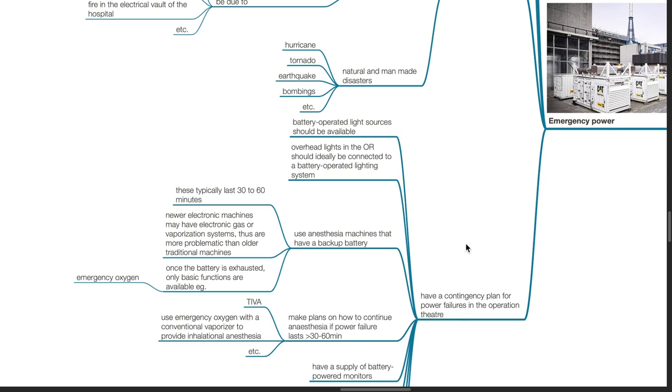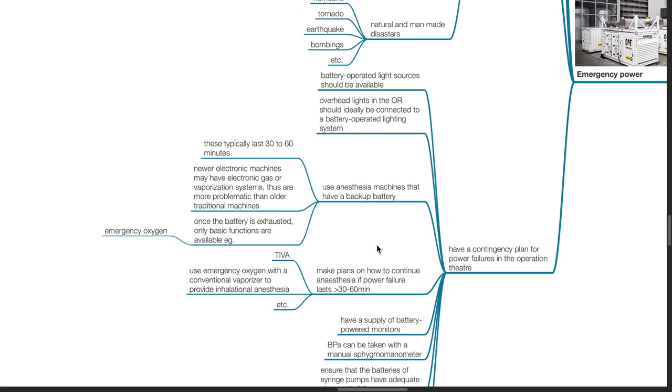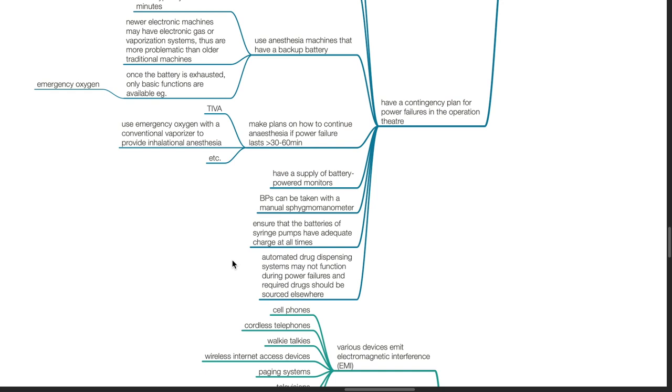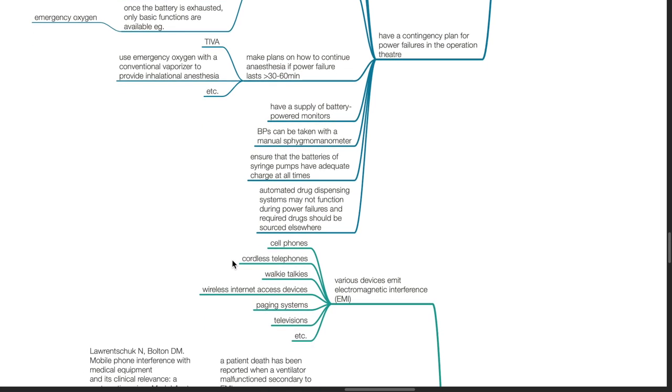Anesthetists should have a contingency plan for power failures in the operation theater. Battery-operated light sources should always be available. Overhead lights in the OR should ideally be connected to a battery-operated lighting system. Use anesthesia machines that have a backup battery; these typically last 30 to 60 minutes. Newer electronic machines may have electronic gas or vaporization systems, thus are more problematic than older traditional machines. Once the battery is exhausted, only basic functions are available such as emergency oxygen. Make plans on how to continue anesthesia if power failure lasts more than 30 to 60 minutes, such as by use of TIVA or use of emergency oxygen with a conventional vaporizer to provide inhalational anesthesia. Have a supply of battery-operated monitors. Blood pressures can be taken with a manual sphygmomanometer. Ensure that batteries of syringe pumps have adequate charge at all times. Automated drug dispensing systems may not function during power failures, and required drugs should be sourced elsewhere.